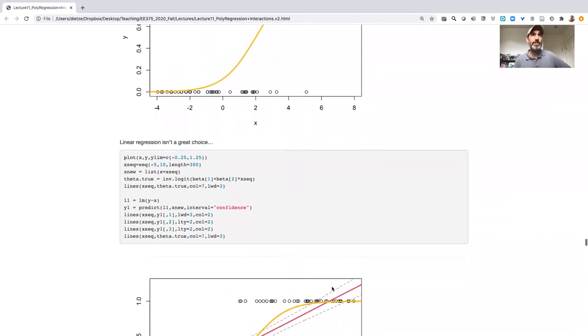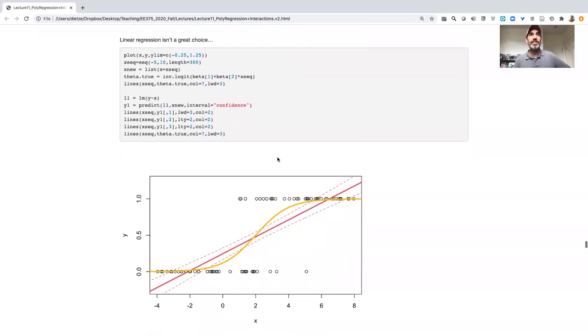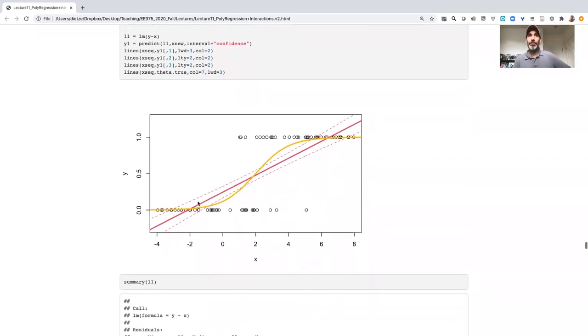Okay, so here in this case I simulated data where this golden yellow line is actually the true model—simulated data according to that model—and then what happens if I try to fit a linear regression? Well, it could be worse. It goes through the middle of the data.